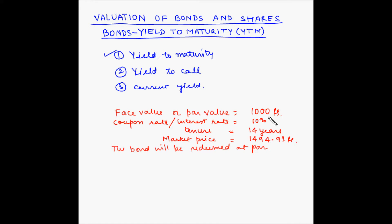Redeemed at par means at maturity the investor will get back the par value which is 1000 rupees. The buyer of the bond will have to pay 1494.93 rupees to the seller, so his investment is this amount. The interest of 10% will be calculated on 1000 rupees and that amount will be paid back to the investor. We have to find out what rate of return the investor is going to get on his investment.